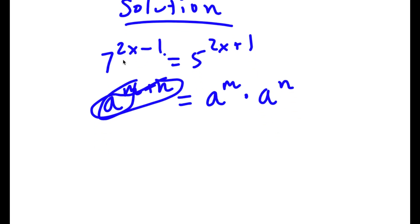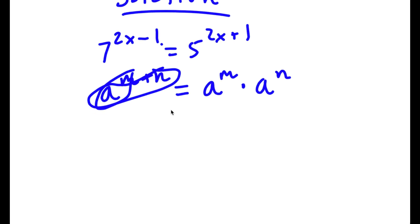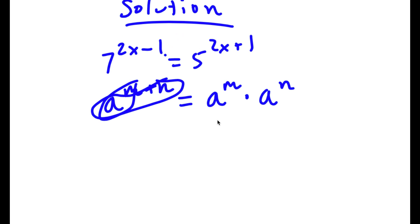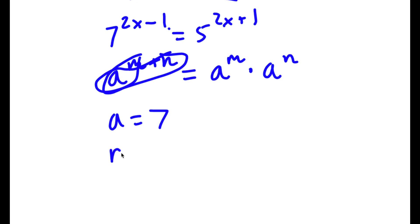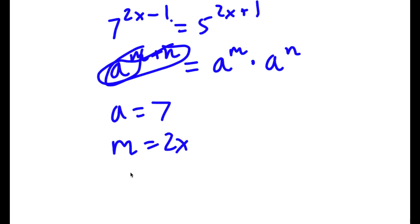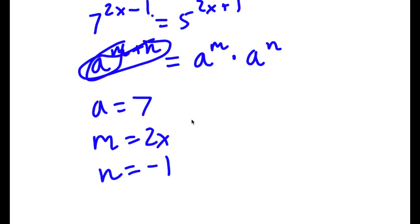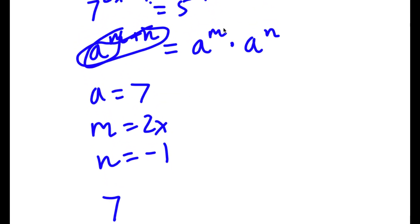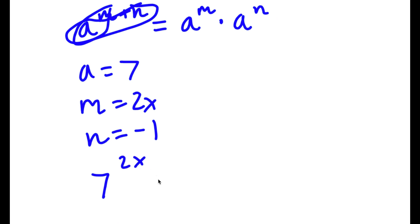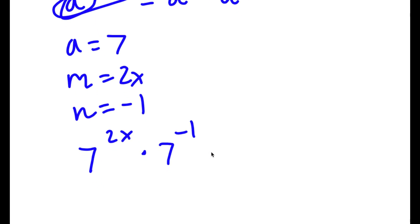So in this case, I have 7 to the power of 2x minus 1. We can think of this as a equals 7, m equals 2x, and n equals negative 1. So I would have 7 to the power of 2x times 7 to the power of negative 1.